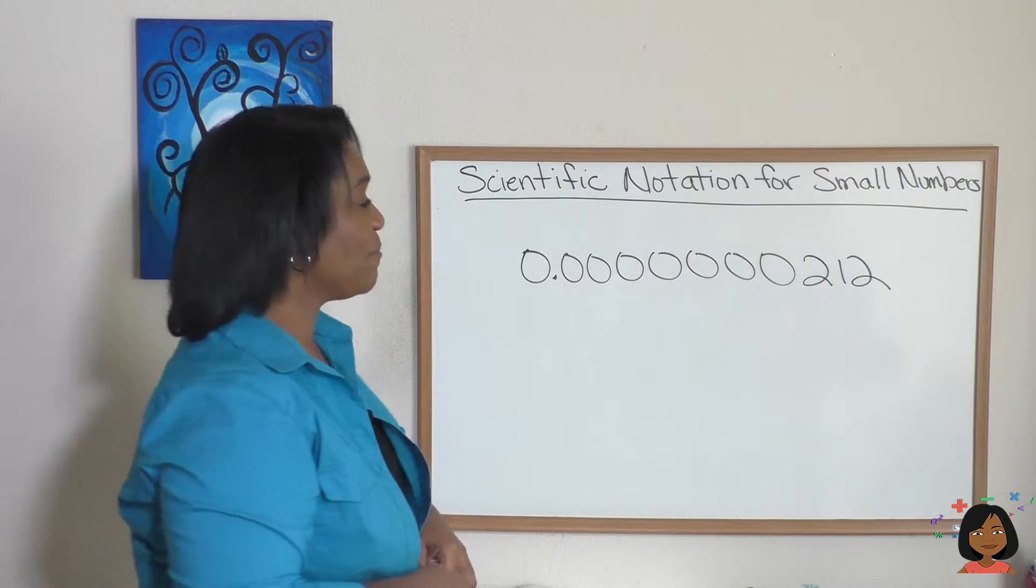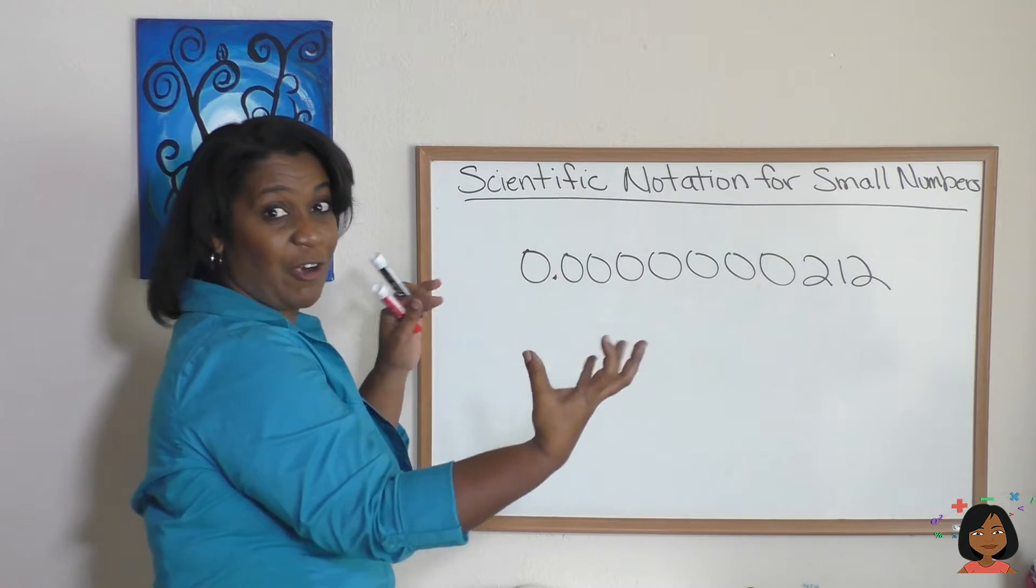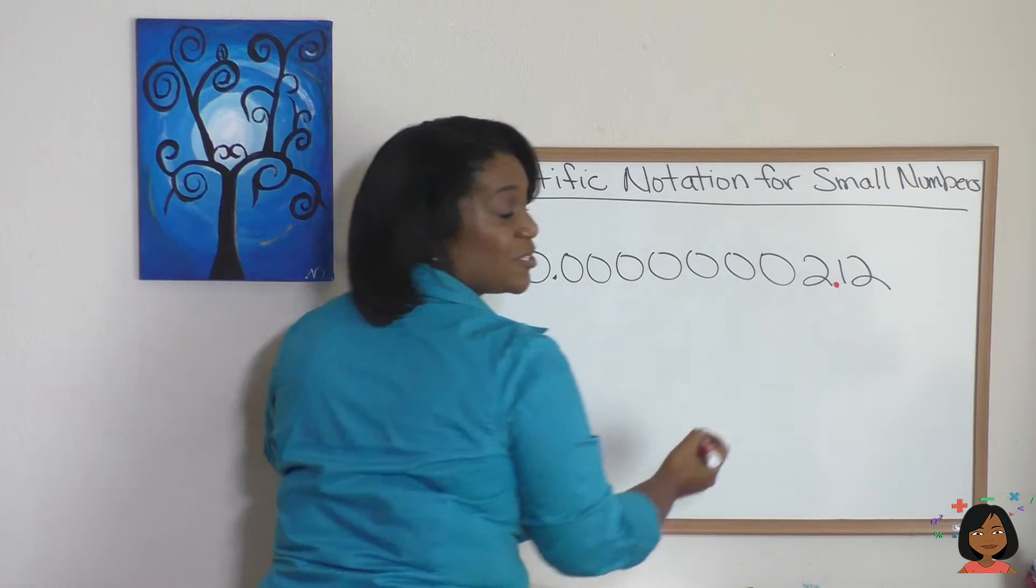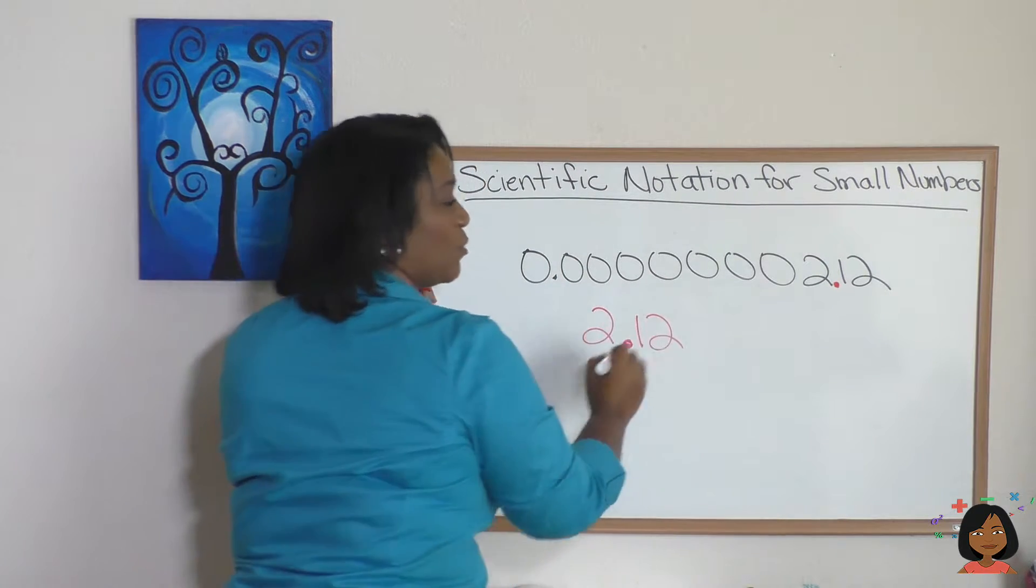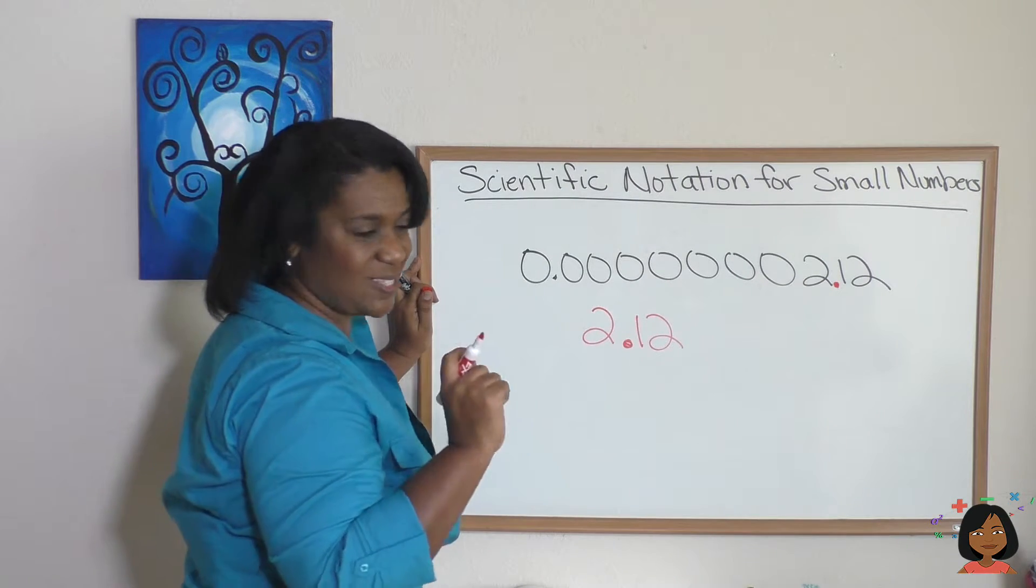Let's try it with this example. Remember, we want to get a decimal, so we go find where our numbers start besides zero. I'm going to want to put a decimal right after my 2. So my number will look like 2.12, and now I count the number of places I'm shifting this decimal to get there.